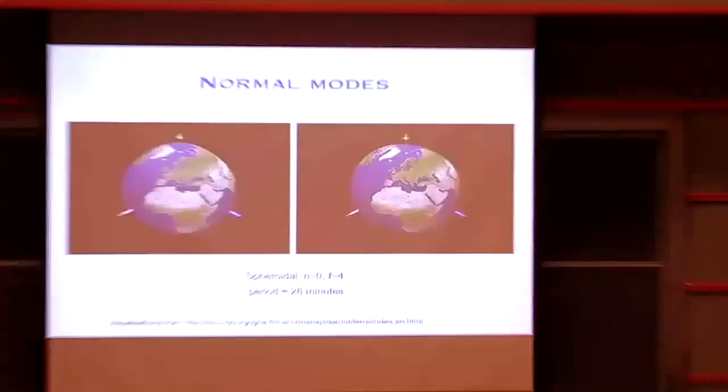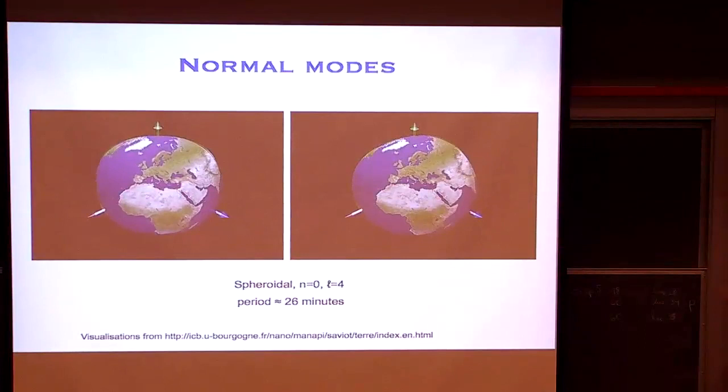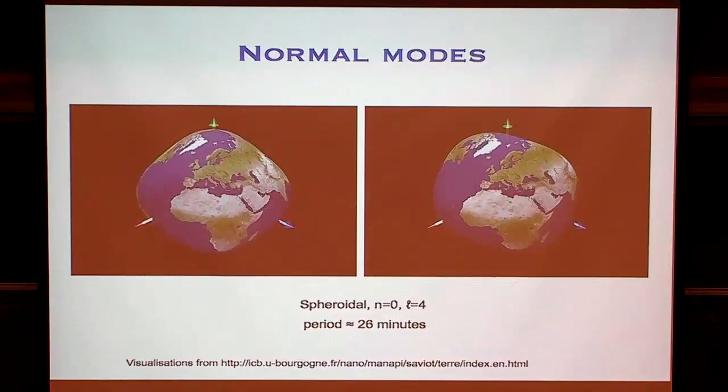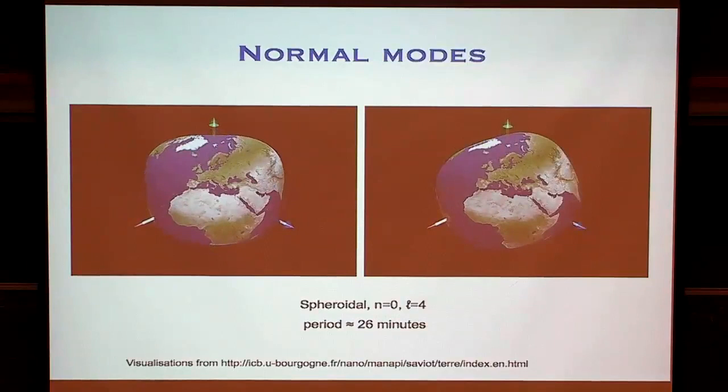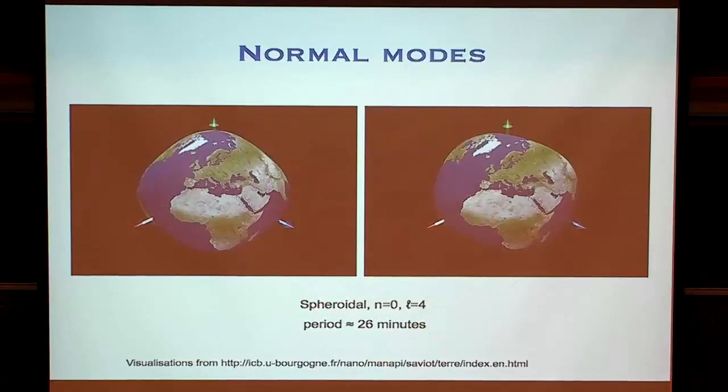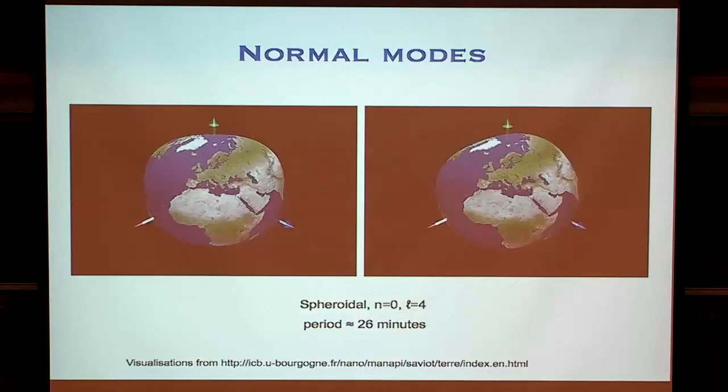Here's a picture of two of Earth's normal modes. First thing I want to say: please don't be alarmed — the Earth doesn't actually bounce up and down this much. This is a mode we normally label 0S4. It's a particular way of the Earth shaking. It has a period of about 26 minutes, so for Greenland to bounce dramatically — or more realistically, to jump on the order of a micron — takes 26 minutes.